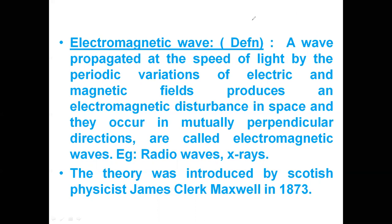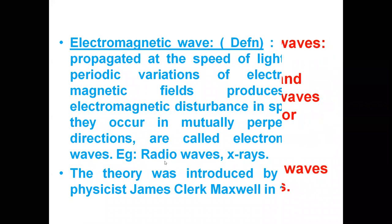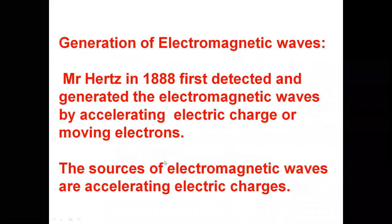Examples of electromagnetic waves include radio waves, X-rays, gamma rays, and light rays. The theory was introduced by Scottish physicist James Clerk Maxwell in 1873. A probable exam question is: how do they travel? They travel mutually perpendicular to each other — both the electric and magnetic fields.